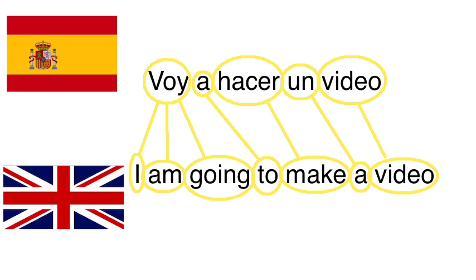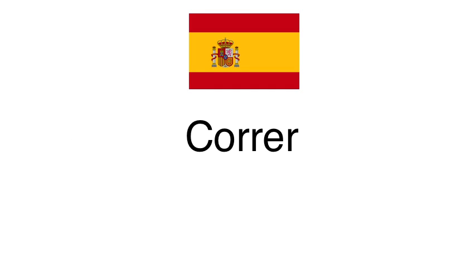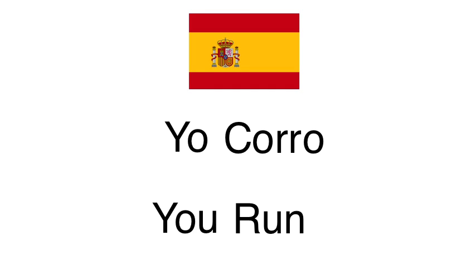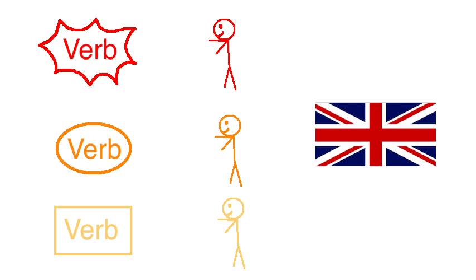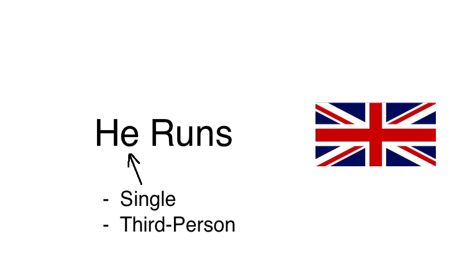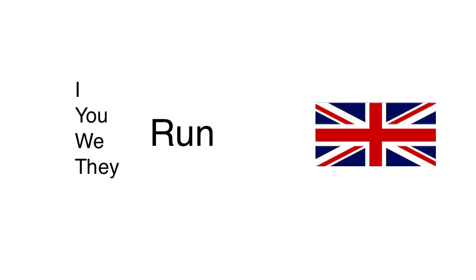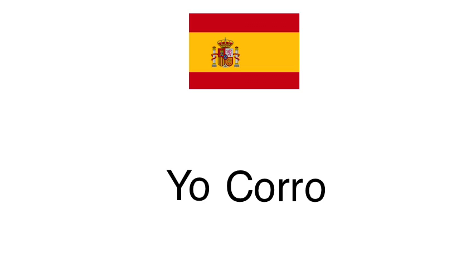Spanish does tend to contain more information per word than English, so it's a good place to start. Many of you might know that Spanish verbs take different forms depending on who's doing the thing. For instance, the Spanish word correr means 'to run,' but 'I run' is yo corro, 'you run' is tú corres, 'we run' is nosotros corremos, and so on. We do this in English too, but not nearly as much — in the present tense we only have two forms for the verb run. Now in Spanish, because you can tell from the suffix who's doing the thing, the subject pronoun is often just dropped. Yo corro is actually kind of redundant, because you can tell from the -o ending that it's me doing the running, so Spanish speakers will frequently just say corro.